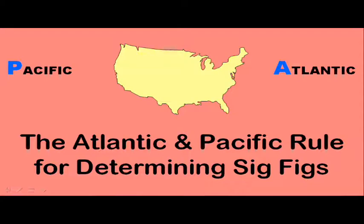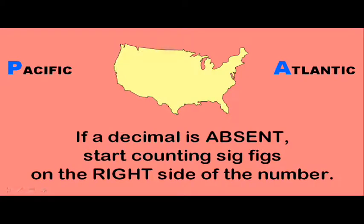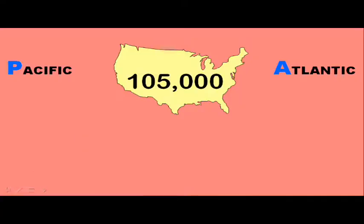Here is a rule that will help you determine whether or not the numbers are significant or not. We have the Atlantic and the Pacific rule for determining sig figs. Okay, if a decimal is absent, we're going to start counting the sig figs on the right side of the number. A for absent, A for Atlantic.